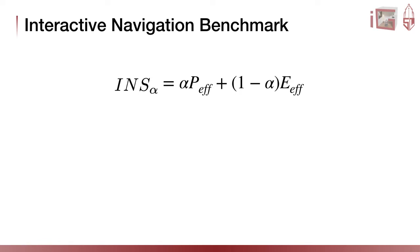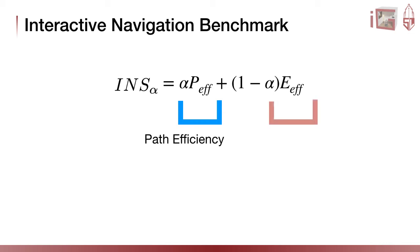As part of the benchmark, we propose a novel score: the Interactive Navigation Score. The INS is a convex combination of path efficiency and effort efficiency, controlled by a combination parameter alpha, which can be used to inject human preferences between aggressive and conservative behavior when ranking interactive navigation solutions.